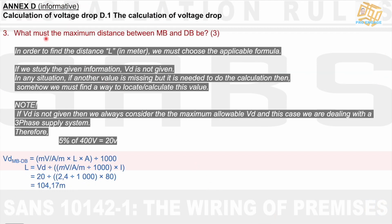Question 3, or part 3 of this question, what must the maximum distance between MB and DB be? In order to find the distance L in meters, we must choose the applicable formula. What formula gives L? That's obvious. We use a formula with L in it. If we study the given formula, VD is not given. In any situation, if another value is missing but is needed to do the calculation, then somehow we must find a way to locate or calculate this value. It sounds so familiar. We've done this before. Only that we've done it for single phase and not for three phase yet.